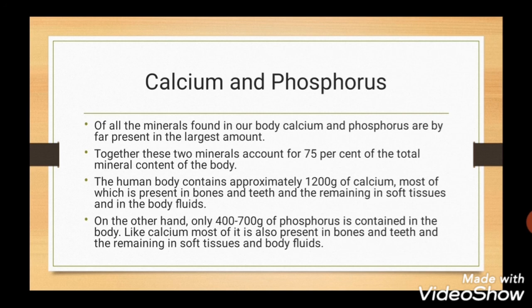The human body contains 1200 grams of calcium, most of which is present in bones and teeth and the remaining in soft tissues and body fluids. If we talk about phosphorus, it is 400–700 grams contained in the body. Like calcium, most of it is also present in bones and teeth and the remaining in soft tissues and body fluids.